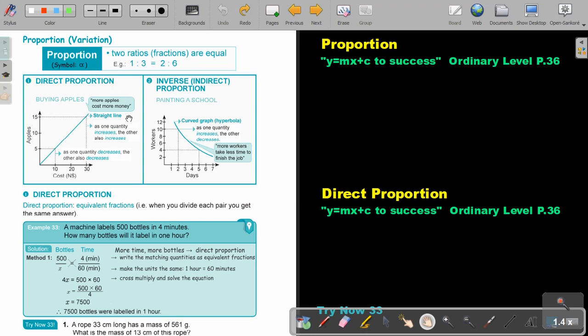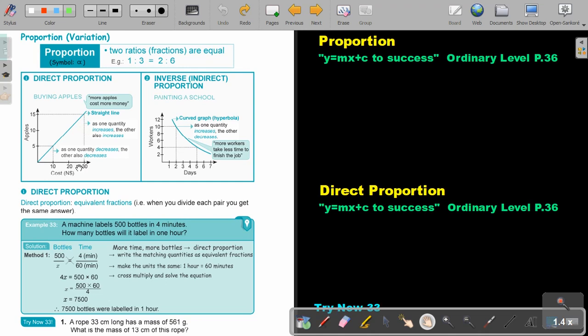Now, let's look at an example of direct proportion. It's for example, buying apples. Say the Cancer Association is selling apples. So five apples will cost me $10. Fifteen apples will cost me $30. So as one quantity increases, the other also increases. But also, as one quantity decreases, the other also decreases. So basically, if one goes up, the other one goes up. If one goes down, the other one goes down. So the more apples cost more money.